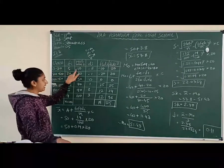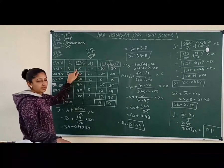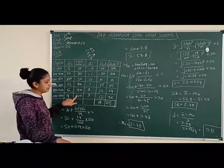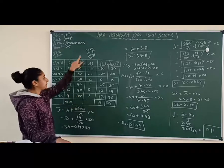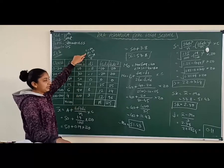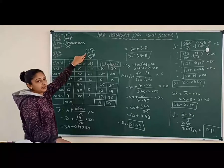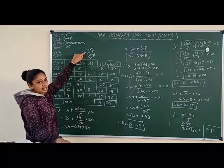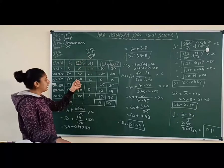Mid value of each class: (0+20)/2 = 10. So we get mid values 10, 30, 50, 70, 90, and 110. After that, using the assumed mean method, we find x̄. The class length c = 20, and we assume a = 50.